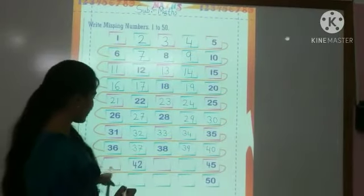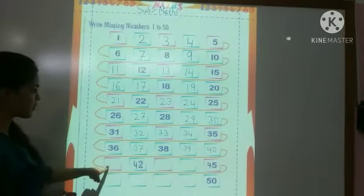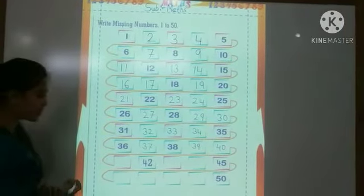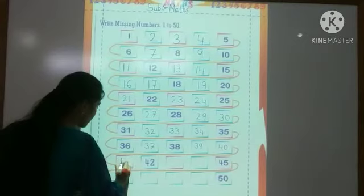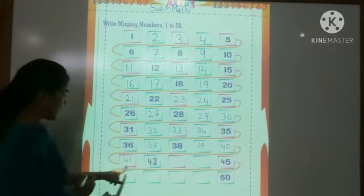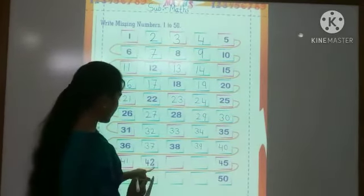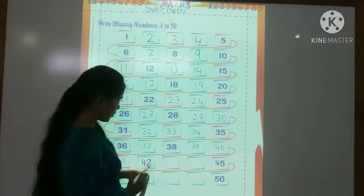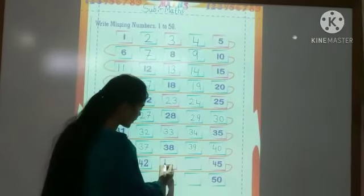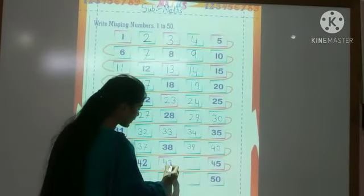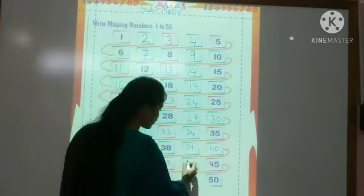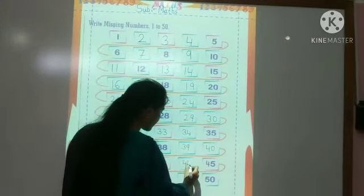4 tens — 40. Then again 1 box is empty. Means after 4 tens, which number comes? 4 tens and 1 — 41. Then 4 tens and 2 — 42 is already here. After 4 tens and 3 — 43. Again which number is missing from here? 4 tens and 4 — 44.